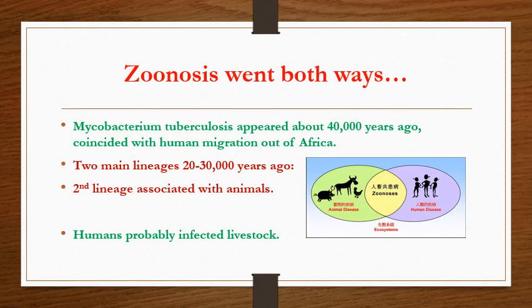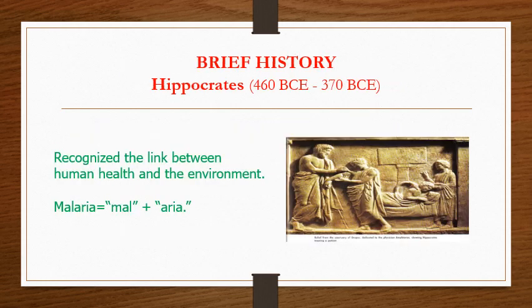Zoonosis went both ways. The diseases from animals can come to humans and can go from humans to animals. Mycobacterium tuberculosis appeared about 40,000 years ago, coinciding with human migration out of Africa. Two main lineages about 20 to 30,000 years ago — the second lineage was associated with animals, meaning humans probably infected animals. Zoonosis can be from livestock or farm animals, from pet animals, and also from wild animals.